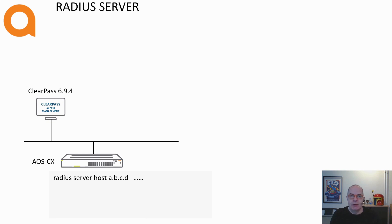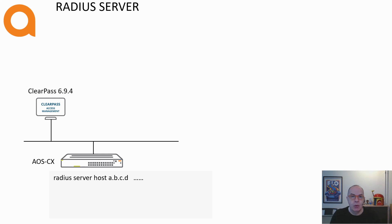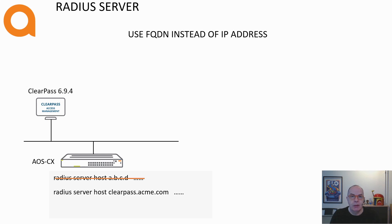For authorization, the switch uses the certificate's CN to resolve the ClearPass server. If the FQDN in the certificate is not the same as the RADIUS server hostname in the configuration, the download of the role will fail. Therefore, it is best practice to define the RADIUS server in FQDN format.